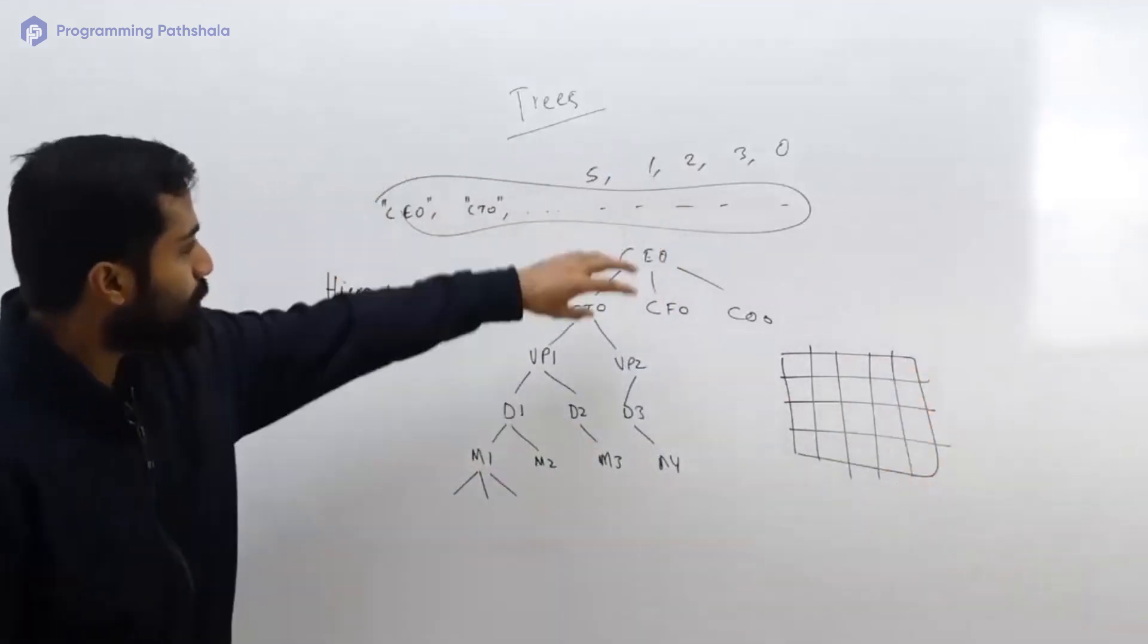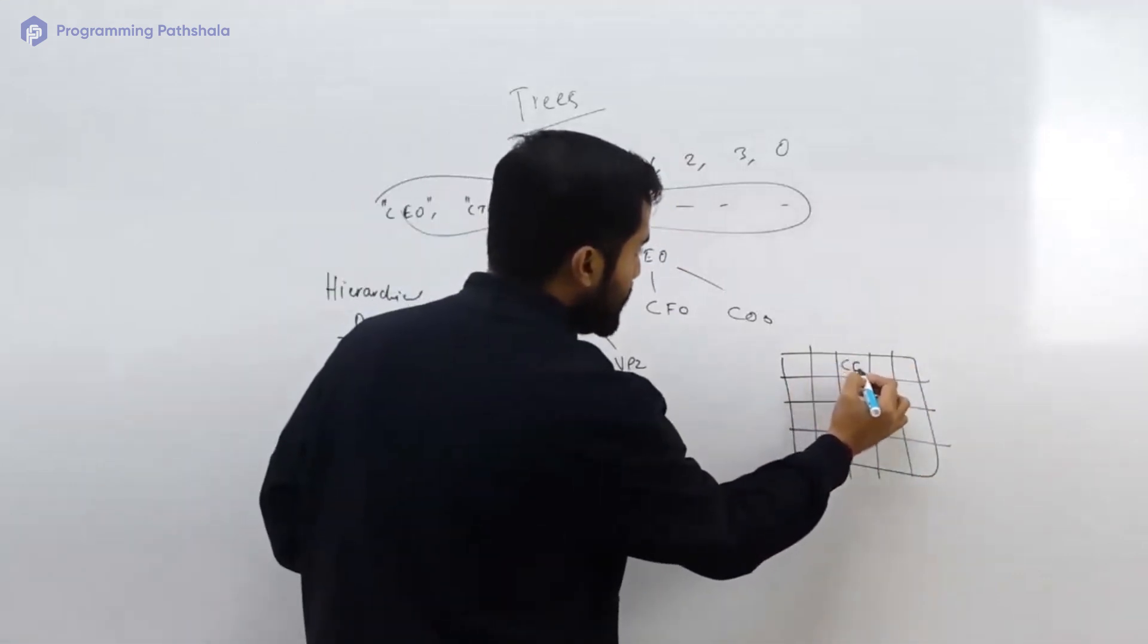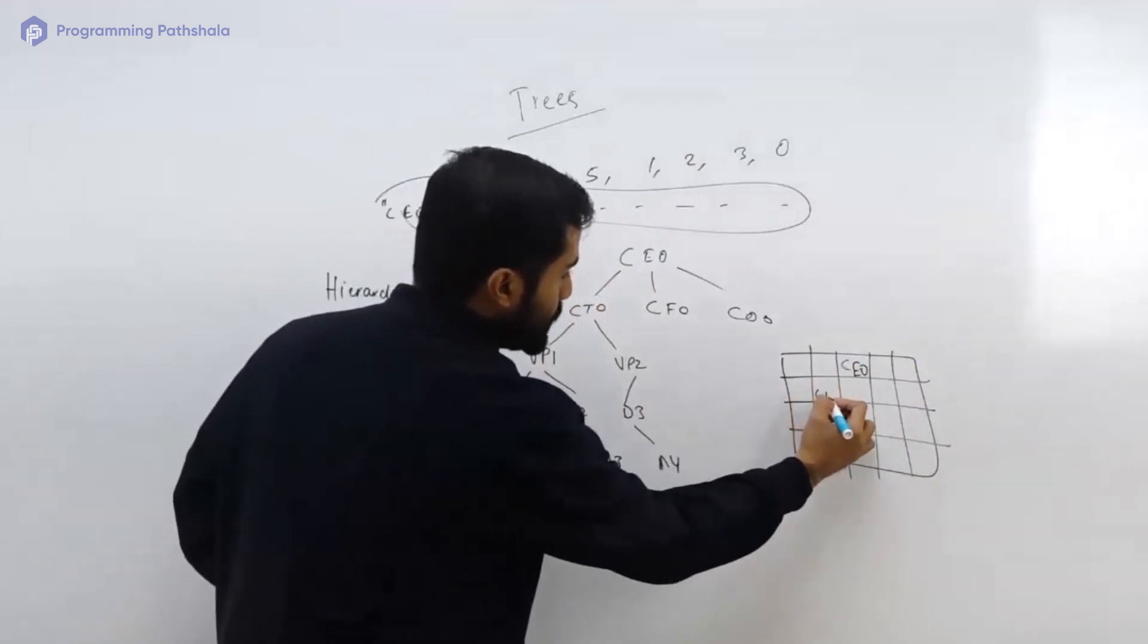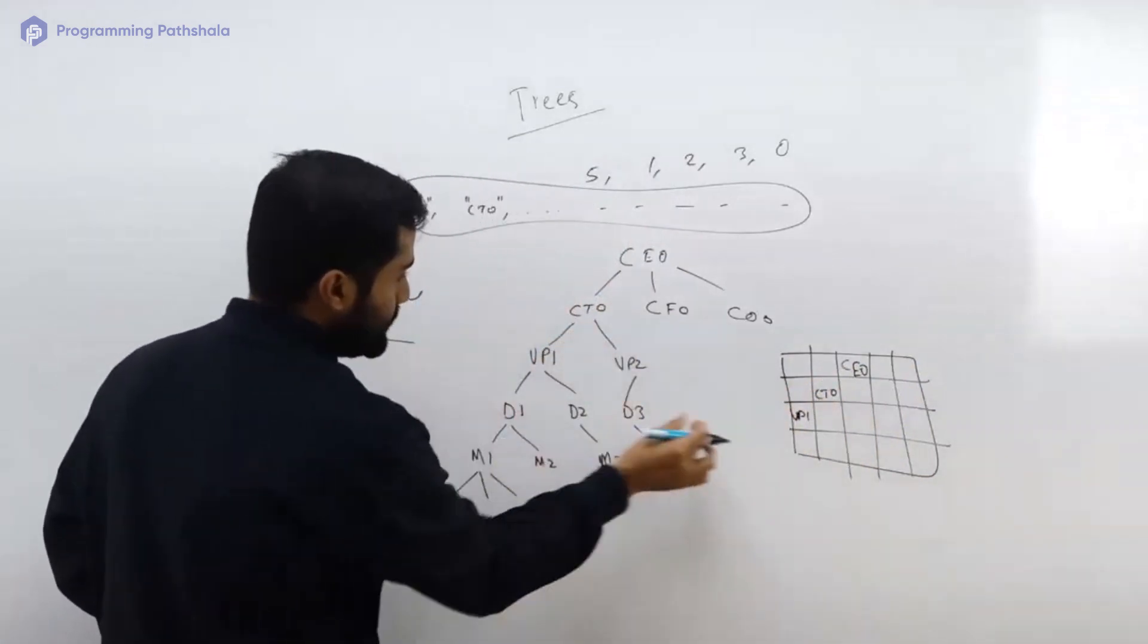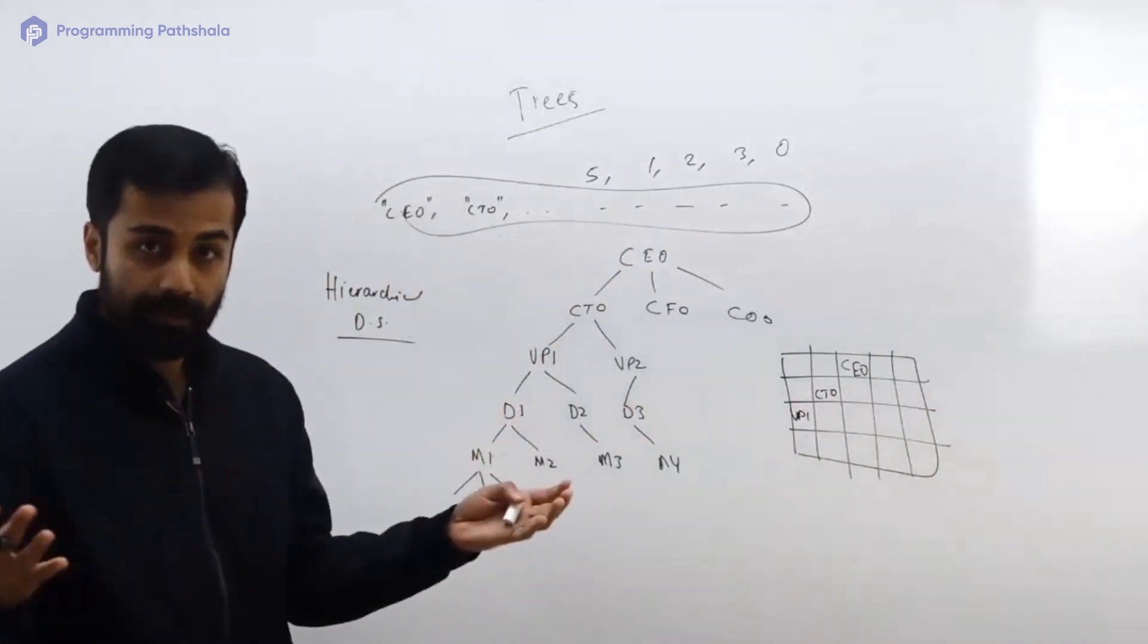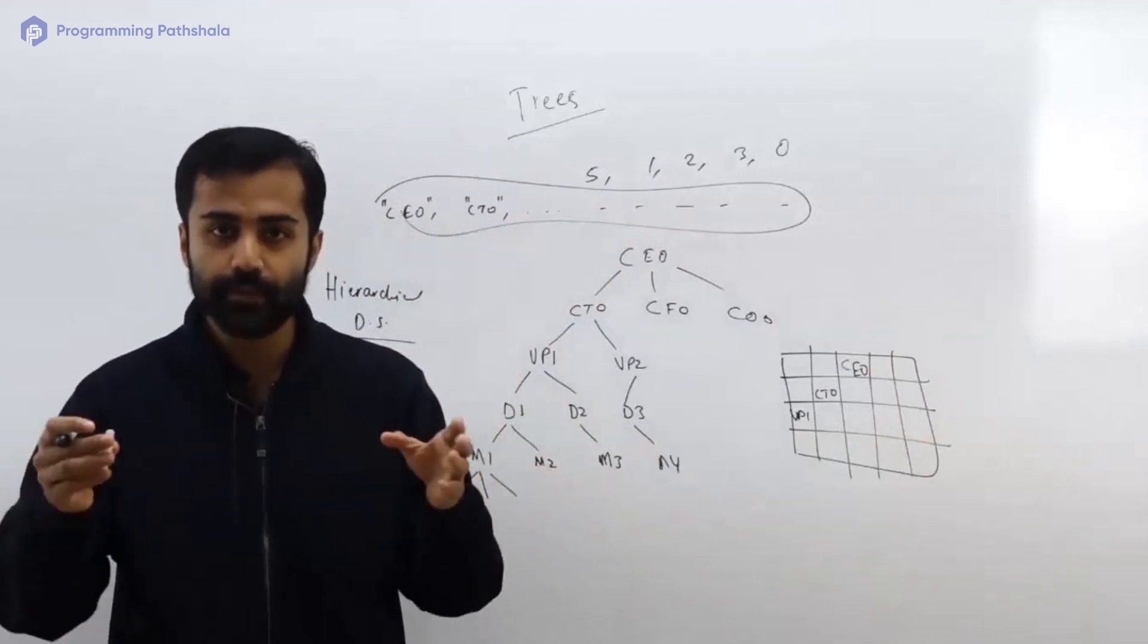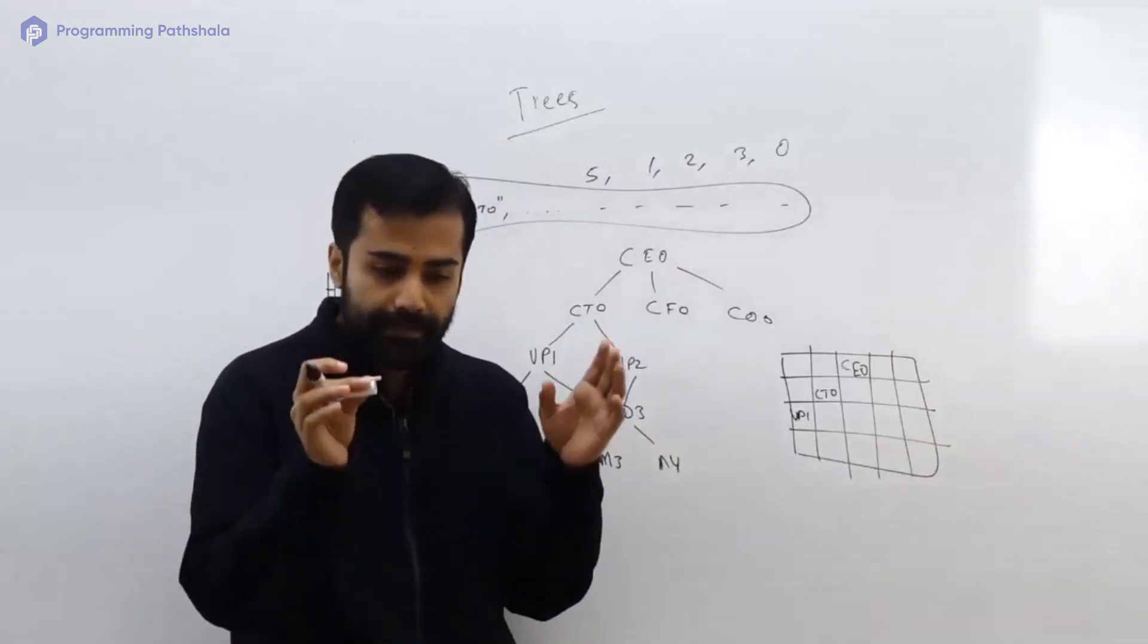Where will you store this root? If you are saying you will store your root here in the middle, I would say does not make sense. In that case let's say you store your CTO here, let's say you store VP1 here. Where will you store this D1? I mean you will have no clue how big in terms of dimensions do you need your 2D array to be.